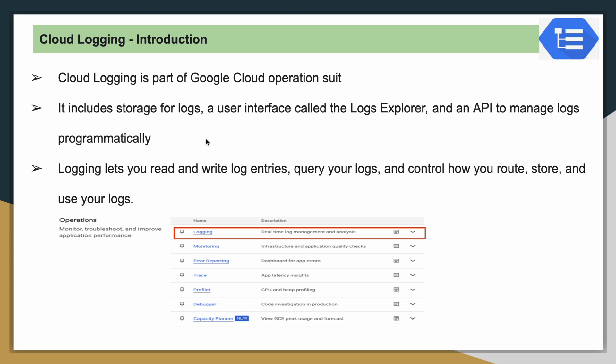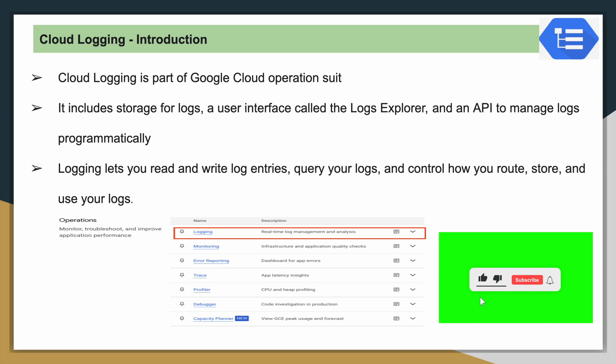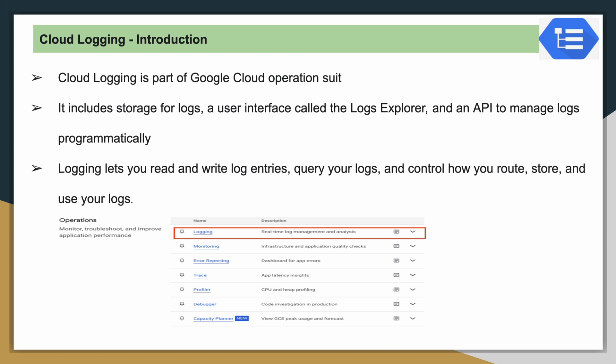Basically this particular service can also store logs. Logs means it can provide log information related to any other service available in the Google Cloud Platform — it is not constrained to a particular group of services. Whatever is happening in the Google Cloud Platform, you can see those related logs, event information, or transaction-related information as part of this logging module.